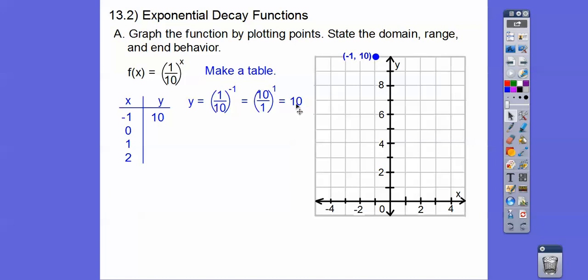So we go to the left one, up 10. And then when we plug in 0, anything to the 0 equals 1, so we get this point, 0, 1. Let's plug in 1 right here. So we get 1 tenth to the 1 power, which is 1 tenth, which is 0.1. This one's going to be 0.01 because 1 squared is 1, 10 squared is 100, 1 one hundredths. So 0.01 is close to 0. So our graph is going to look like this.